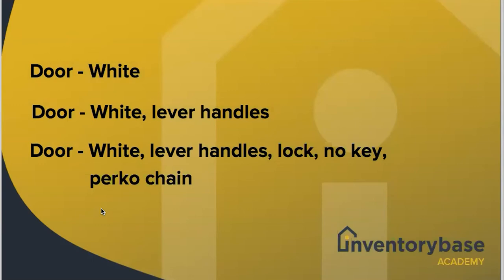Moving further: 'door, white, lever handles, lock, no key, perco chain.' Now I'm getting an understanding of what's being described. I can gather it's a white door with a lever handle and a lock but no key — can it be secured? And a perco chain suggests it's either an outside door or a kitchen door that needs to close for fire resistance — it's a fire safety door. So I'm starting to get a picture of what that door is.